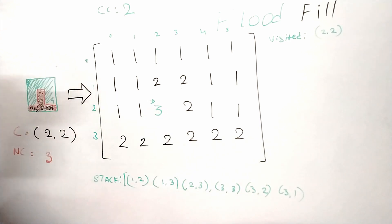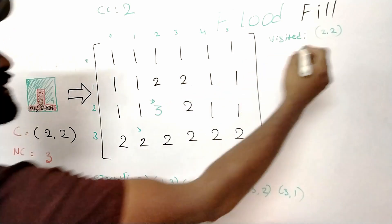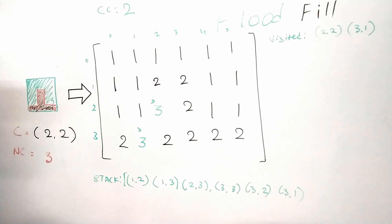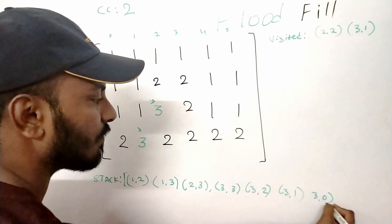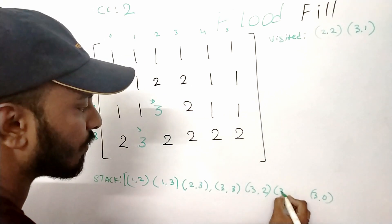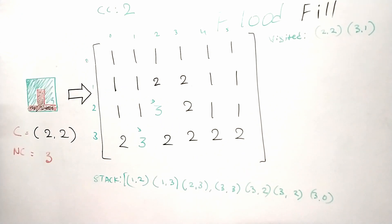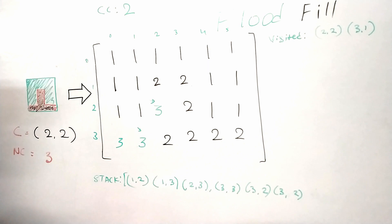Before traversing to the next cell, we replace the value from two to the new color three. We go to three comma one, add it to visited, replace its value with the new value, and find its valid neighbors — three comma two and three comma zero. We add three comma zero to the stack, then take three comma zero from the top. We go there, find no valid neighbors, and just replace the value and add it to the visited list.